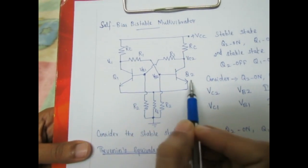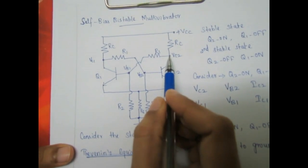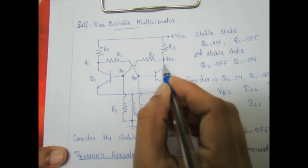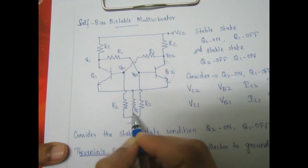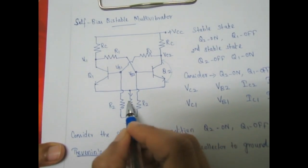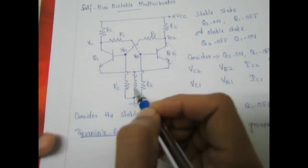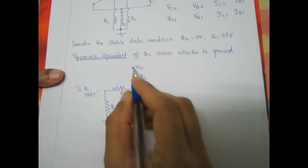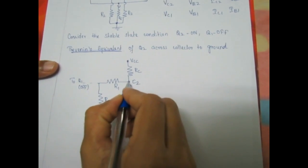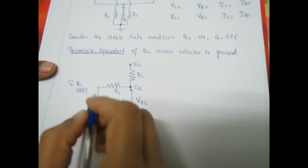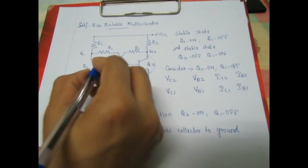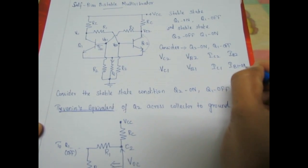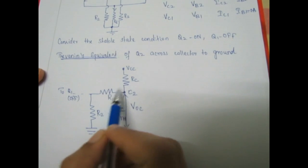If Q2 is ON, we have to find Vc2 and Vb2. Here Vc2 is equal to the saturation voltage across collector-emitter plus the voltage drop across the emitter resistor. We don't know the current flowing through the emitter resistor, so we are going to draw a Thevenin equivalent of Q2 from collector to ground. From Vcc through RC it is connected to the collector, then from the collector it is coupled to the base of Q1. Since Q1 is OFF, the current through Q1 is zero, i.e., Ib1 = 0 A.